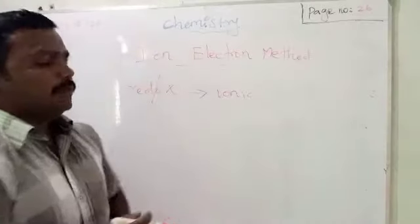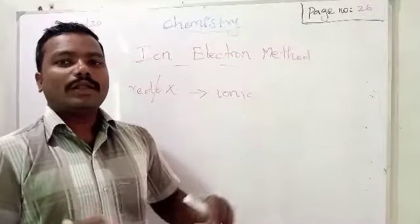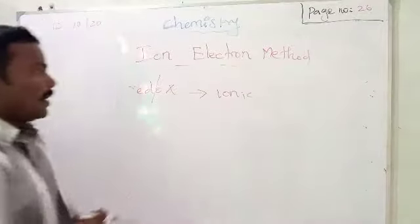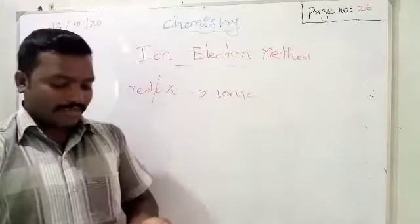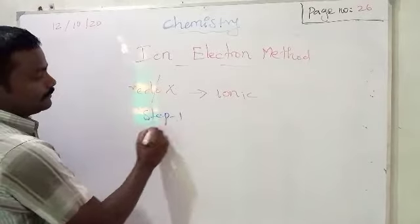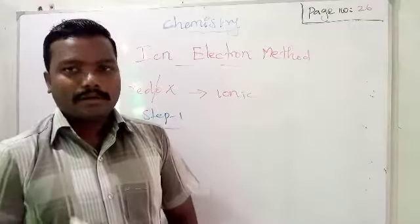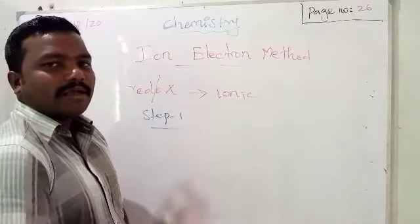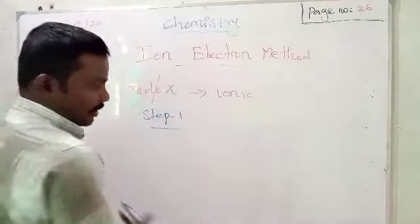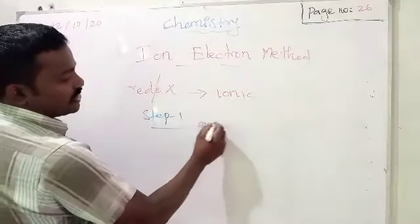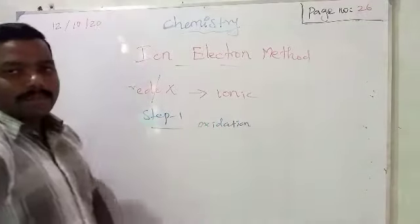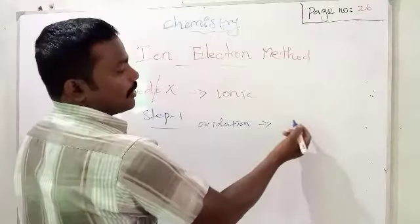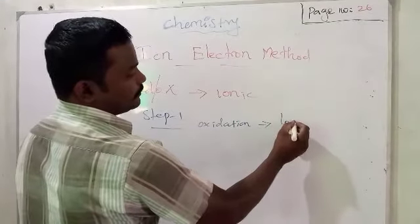Then, step 1. What is step 1? As usual, like in the oxidation method, we want to find which one undergoes oxidation and which one undergoes reduction. We want to find which one undergoes oxidation. What is the definition for oxidation? Addition of oxygen, removal of hydrogen, or loss of electron. Here for oxidation, because of the ionic redox reaction, we find oxidation based on electron transfer — that is, loss of electron.